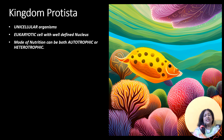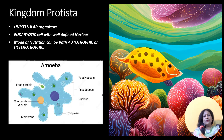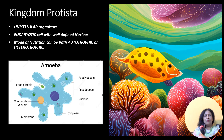Coming to the next kingdom is Protista. The Greek word protista means first. They are the first of the eukaryotic cell types. Eukaryotic cell is a cell with a well-defined nucleus having a nuclear membrane. All organisms basically are unicellular with an exception of pandorena. The mode of nutrition can be either autotropic or heterotropic.